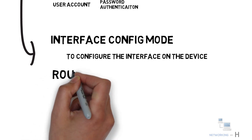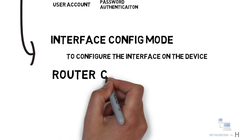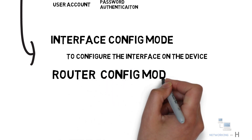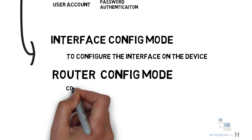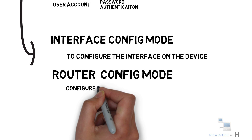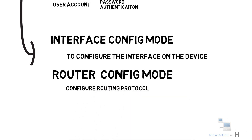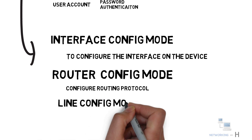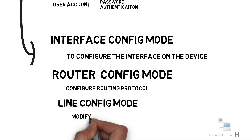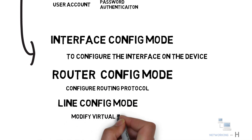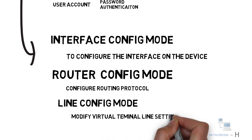The next mode is the router configuration mode. In this mode you can configure an IP routing protocol, so it can also be called routing protocol configuration mode. Then we have line configuration mode, where commands allow you to configure the settings of VTY ports. This virtual port allows Telnet or SSH access to the device.